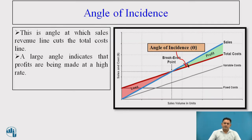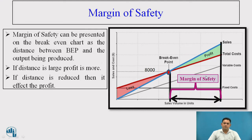The angle of incidence lies between the sales line and the total cost line on the break-even chart. Margin of safety can be presented on the break-even chart as the distance between the break-even point and the current output level. If the distance is larger, profit is more. If the distance is reduced, it will negatively affect profit.